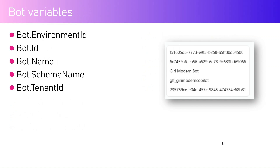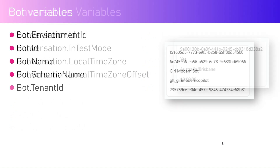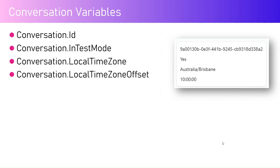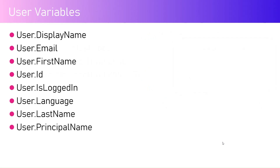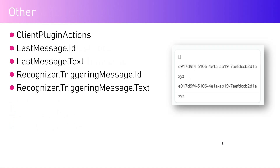There is a 'bot' variable — if you want to know the environment ID, bot ID, bot name, schema name, or tenant ID, you can use it. There is a 'conversation' variable for local timezone, offset, whether it's in test mode, or the conversation ID. There is a 'user' variable for display name, email, first name, user ID, language, last name, and principal name. A 'client plugin action' variable provides the last message ID, last message text, or the recognized trigger message ID and text.